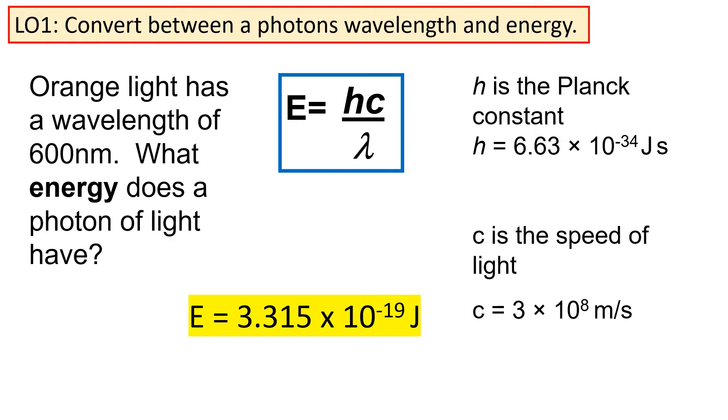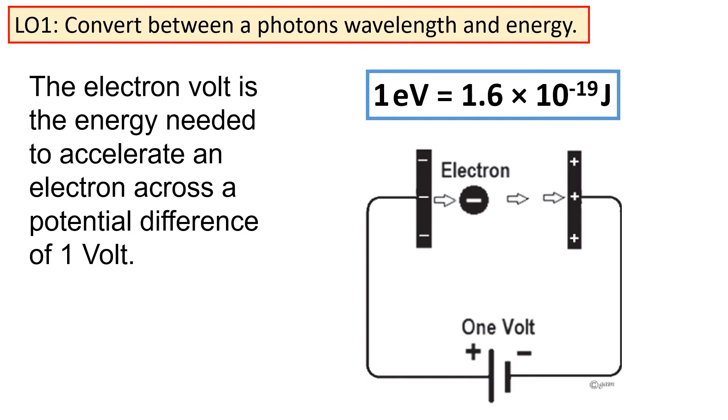This is, of course, an incredibly small number. So, when we're dealing with quantities on this scale, we often use a different unit, the electron volt. An electron volt is the energy needed to accelerate an electron across a potential difference of one volt. What's more important for you, however, is you know the magnitude of an electron volt. One electron volt is 1.6 times 10 to the minus 19 joules.